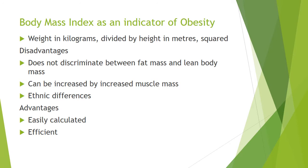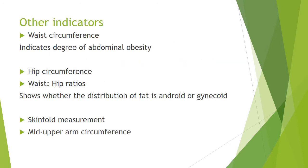Advantages of BMI: it can be easily calculated and it is a very efficient measure of obesity. Other indicators of obesity include waist circumference, which indicates the degree of abdominal obesity; hip circumference measured from the two greater trochanters; and waist-to-hip ratio, which shows whether the distribution of fat is android or gynecoid. The skinfold measurement shows subcutaneous fat, and the mid-upper arm circumference shows the same. These are more often used in children's age groups.